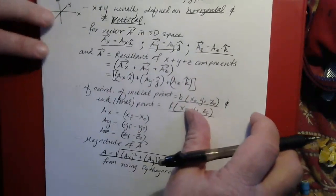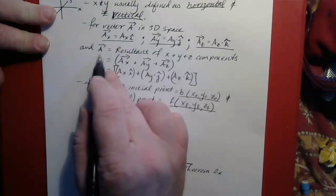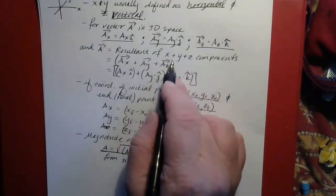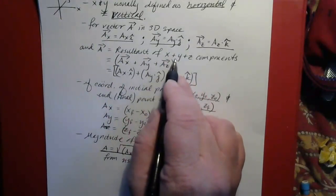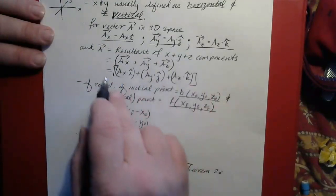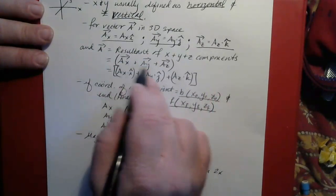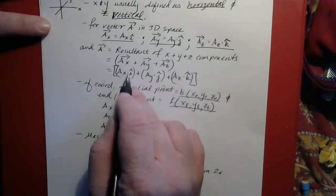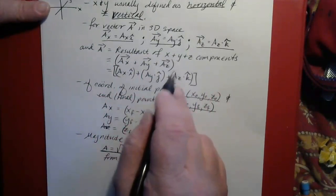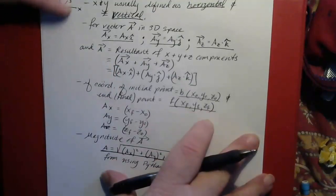So we have three components now instead of two. The overall vector is just the resultant of the components in the various directions — x, y, and z — that add up to give the overall vector. So vector a is ax times i plus ay times j plus az times k. That is a way of defining vector a.